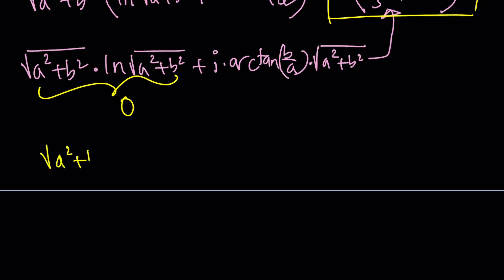But if the square root of a squared plus b squared is zero, then a squared plus b squared is zero, and that implies a and b to be zero because a and b are real.